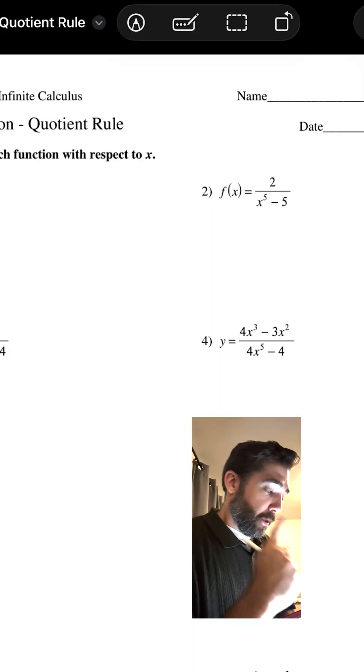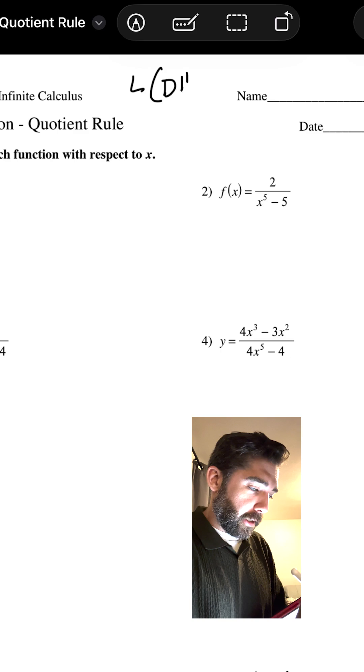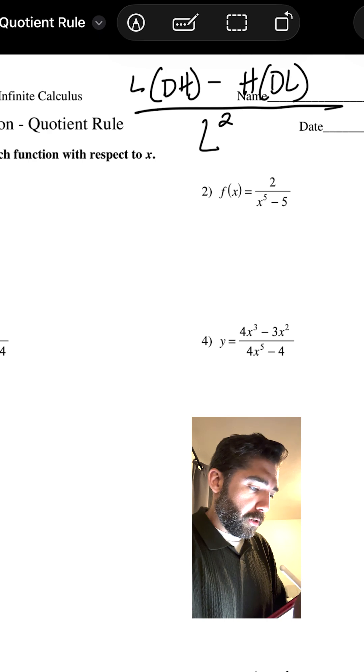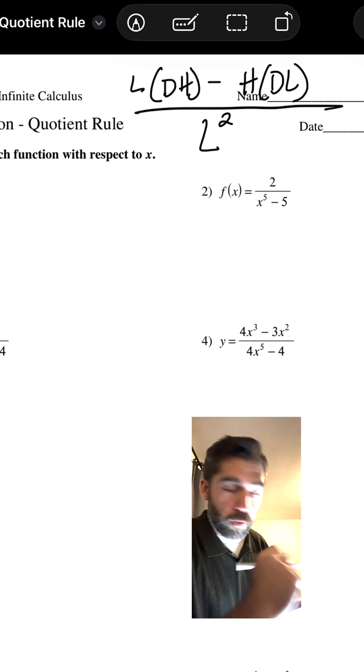I don't know, make a rap out of it, make a country song out of it, I don't care. But here it is, low, so we can write it like this: low d high minus high d low, all over low low, or low squared.